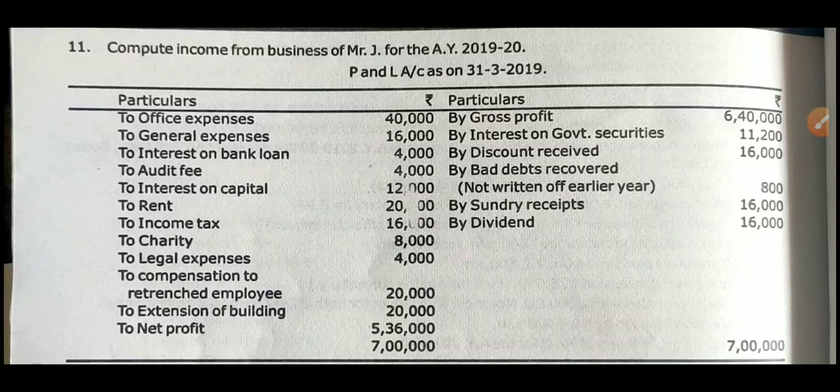As we know, under the debit side, the expenses will be given — admissible, inadmissible expenses as well as net profit will be included. Under the credit side, business incomes, non-business incomes, tax-free incomes, and gross profit will be included. You have to segregate the expenses into admissible and inadmissible. If admissible expenses are given, ignore them. If inadmissible expenses are given, add them back to net profit.